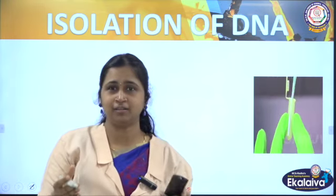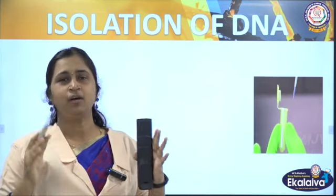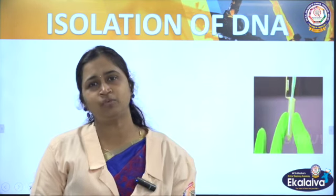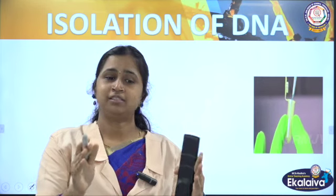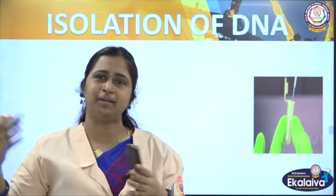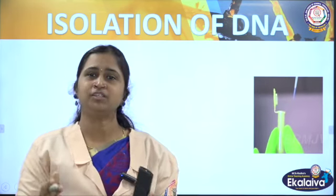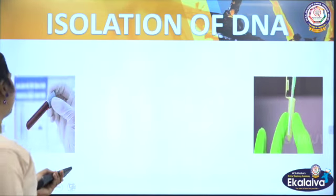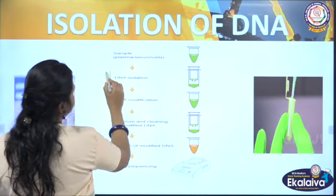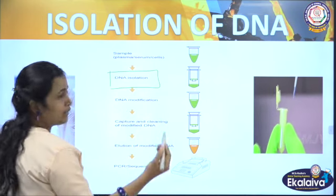First, we have to isolate the DNA. From where? We are doing DNA profiling to check the suspect, so we take a blood sample or saliva — many things. In the blood cells, WBC cells are taken because only they have a nucleus, and from that nucleus we take the DNA. Isolation involves taking the blood sample through various levels — using chilled ethanol and other steps — and you get the DNA using a spooling technique.